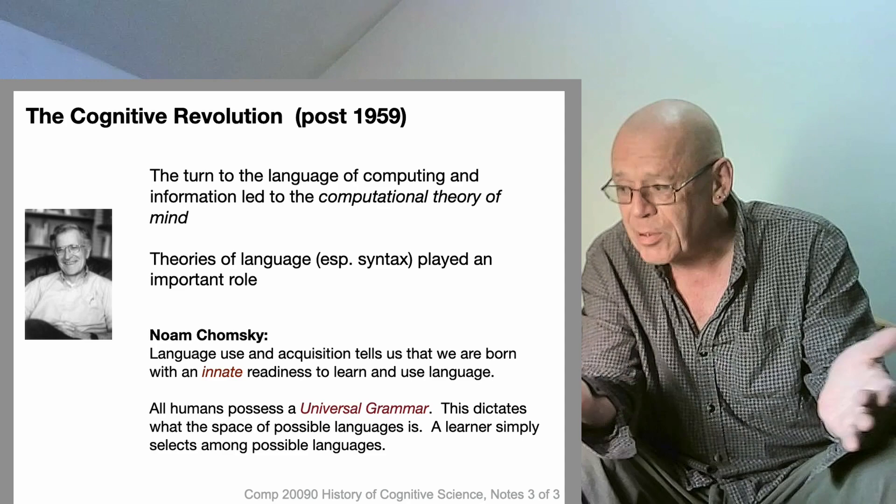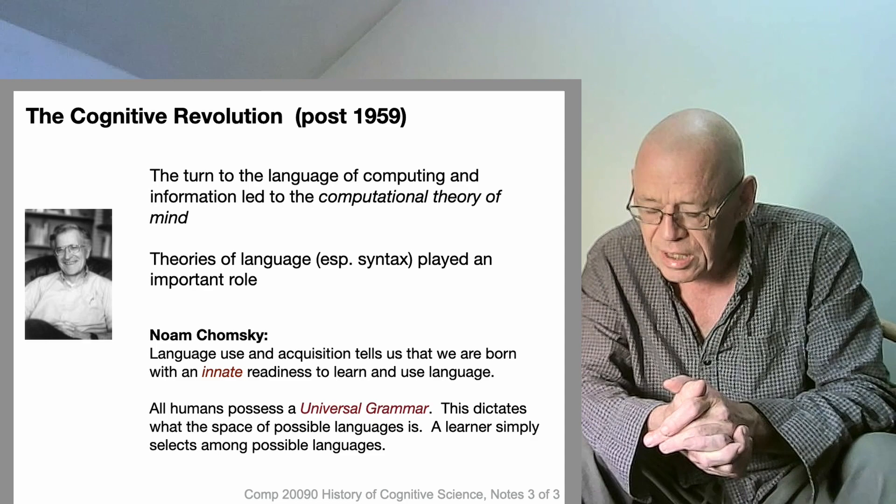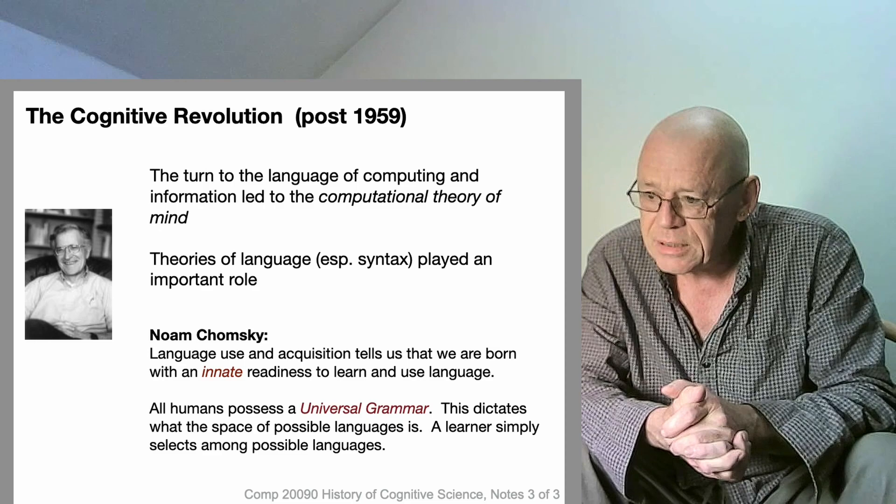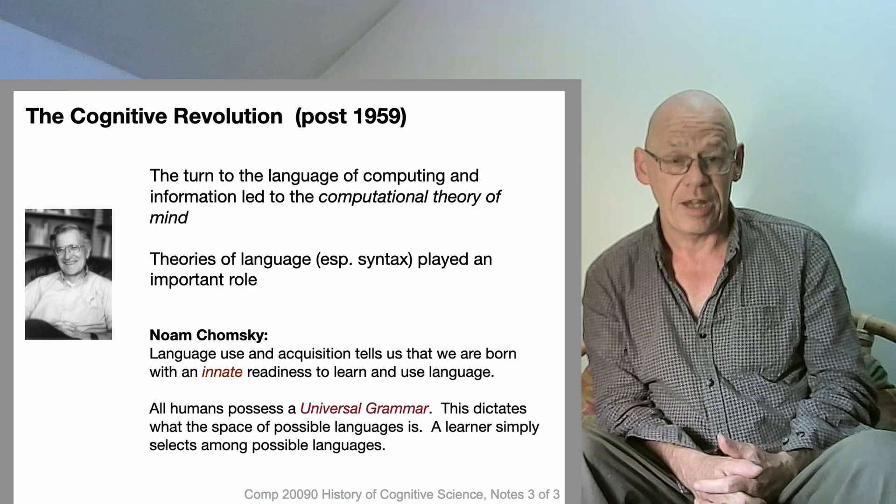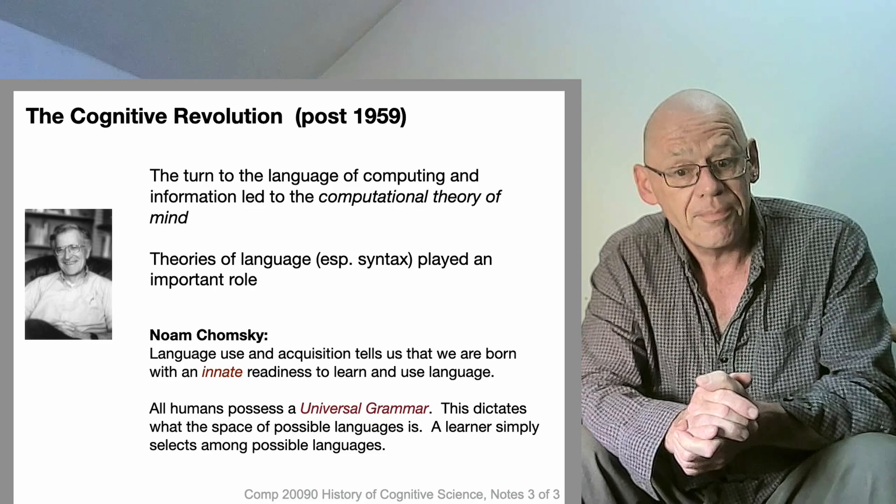This happens over a period of about 20 years. We're going to call it the cognitive turn, sometimes the cognitive revolution. This is a change that affects all branches of science and leads to a brand new set of metaphors for talking about things that have been talked about for many years. At the center of all this is of course the development of what we call the computer.